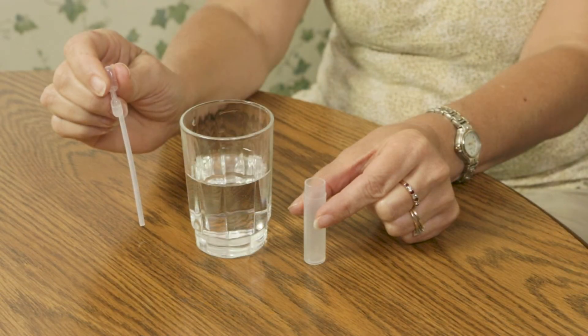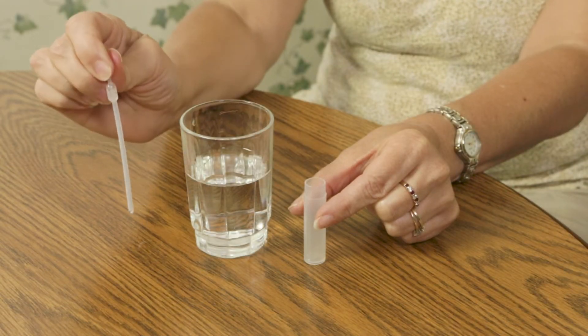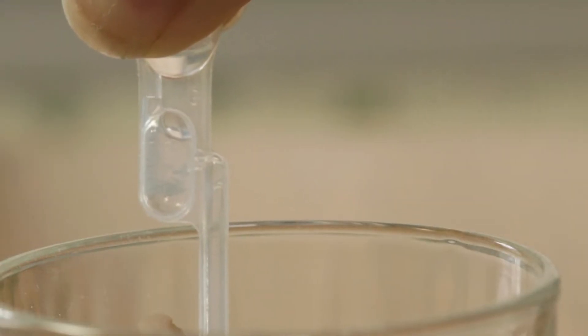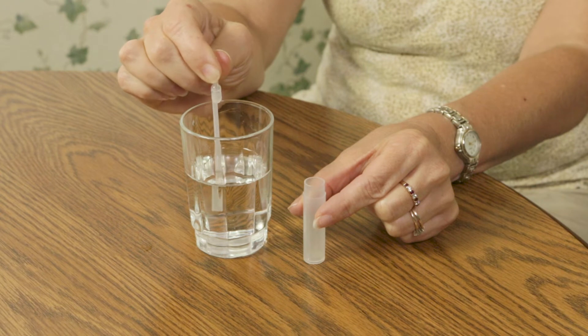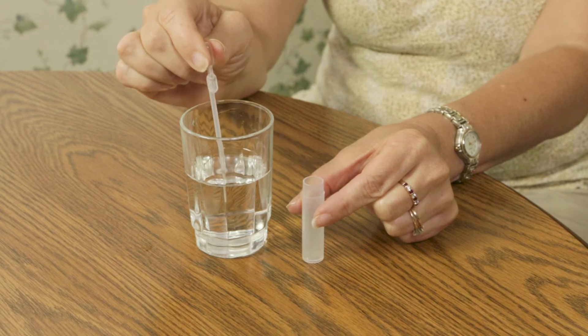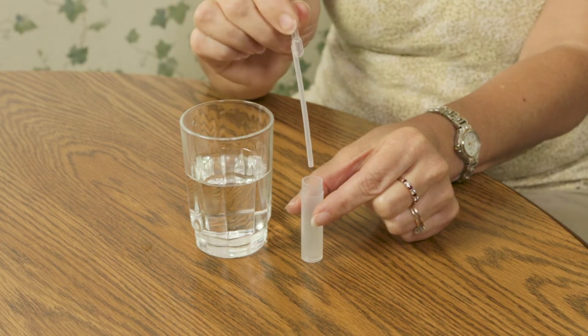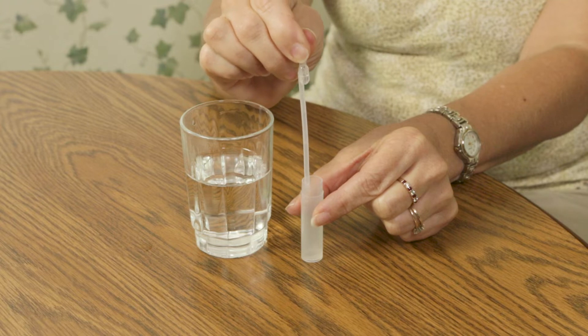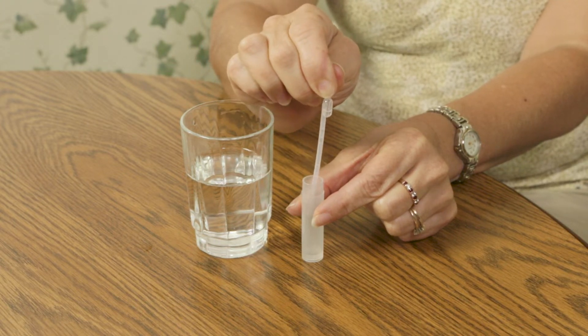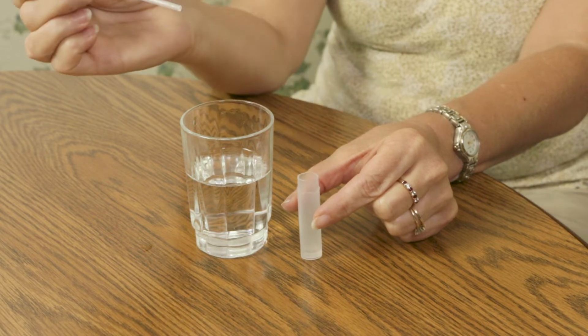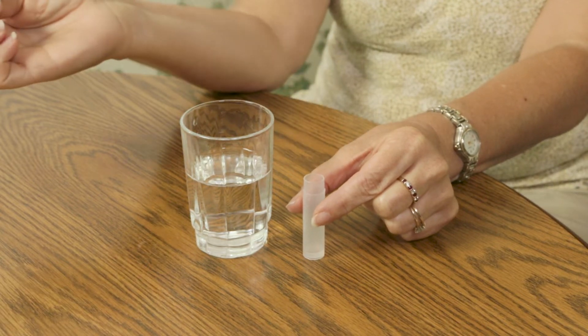Put one pipette full of water into the test vial. Squeeze and hold the bulb on the pipette. Place the pipette into the water and release the bulb. Place the pipette into the vial and squeeze the bulb to release the water. Use only one pipette full of water. Too much water will cause invalid test results.